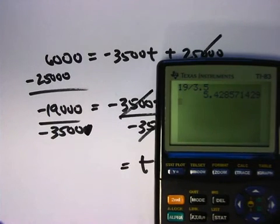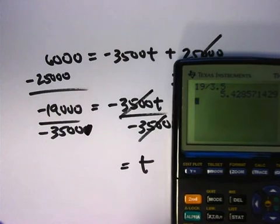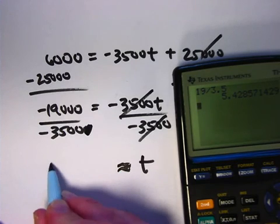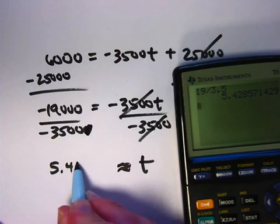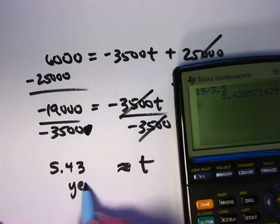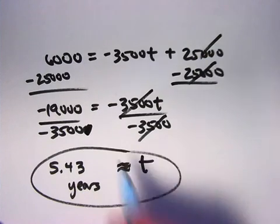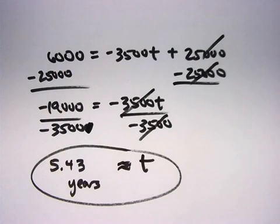Actually, that looks like it would be 5 and 3 sevenths. But I'll just write it as approximately 5.43 years. So that's our approximation for how long it's going to take for the car to depreciate to $6,000.